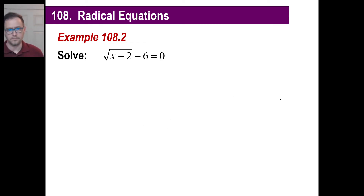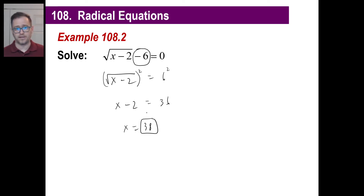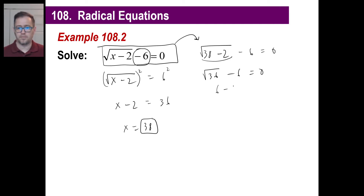Let's try another one. Same deal — we move terms to isolate the radical first, so we square the radical of x minus 2 equals positive 6. Squaring both sides gives x minus 2 on the left, and 6 squared is 36 on the right. So x equals 38. We check: the square root of 38 minus 2 minus 6 should equal 0. 38 minus 2 is 36, the square root of 36 is 6, and 6 minus 6 equals 0. That works — x equals 38 is a legitimate answer.